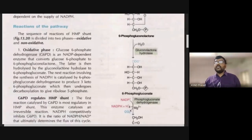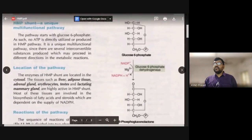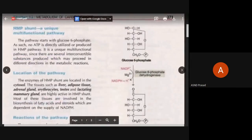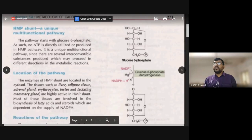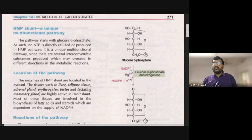In the oxidative phase, the first reaction begins with the substrate glucose-6-phosphate. Glucose-6-phosphate is converted to 6-phosphogluconolactone by the enzyme glucose-6-phosphate dehydrogenase. Hydrogen is removed at the first carbon and donated to NADP+, converting it to NADPH in the presence of magnesium ions. NADPH is an important by-product of the HMP pathway.